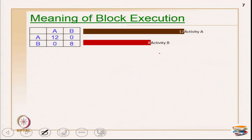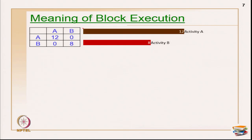I have taken a very hypothetical example with a block having activities A and B. The duration for A is 12 and duration of B is 8, and I have used 0 as the relationship between the two activities. Zero implies there is no relationship between A and B. Suppose if you want to have a minimal value, you may put 0.1 to show repetition; otherwise 0 implies no relationship at all.